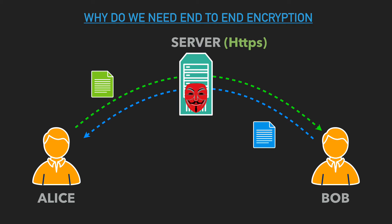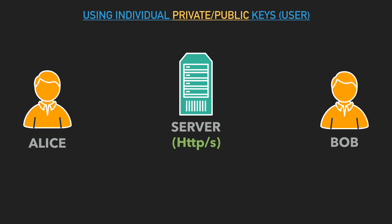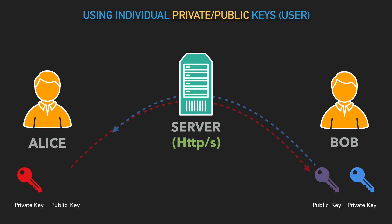Now let's look at a second approach using public and private keys. Alice generates her private and public key pair, and Bob generates his. Alice encrypts her message using her private key, which can be decrypted using Alice's public key. Alice and Bob exchange only their public keys while keeping their private keys to themselves. So Alice has Bob's public key and Bob has Alice's public key. Alice encrypts a message with her private key and Bob decrypts it with Alice's public key.